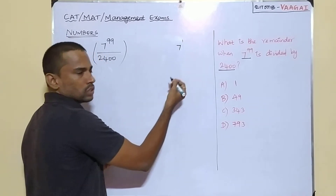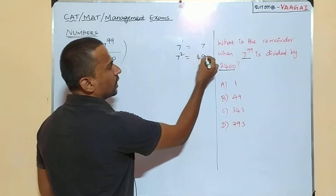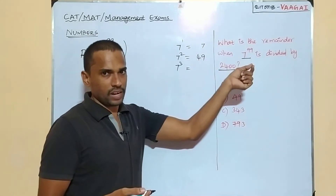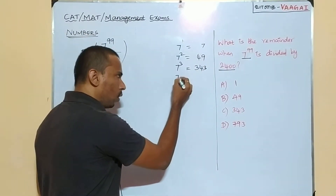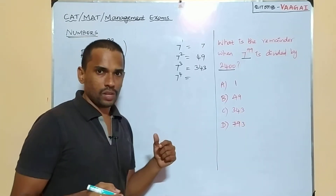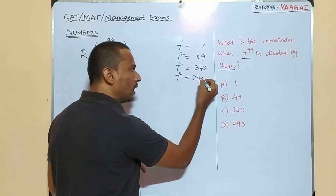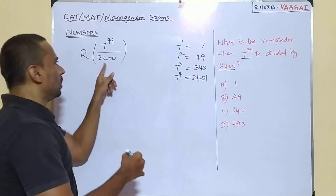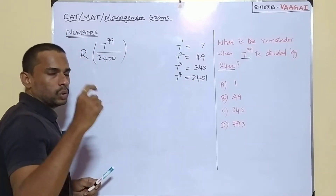Let's start from 7 power 1, which is simply 7. Next, 7 power 2 is 49 — too far away. Then 7 power 3 is 49 times 7, which is 343 — coming closer. And 7 power 4 is 343 multiplied by 7, which gives us 2401. Surprisingly, 7 power 4 equals 2401, which is much, much closer to 2400, the number we are dividing by.